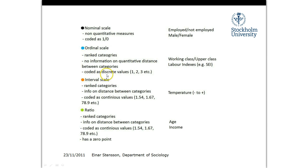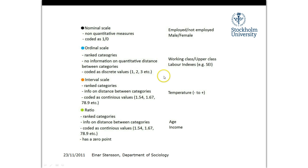Ordinal scale is different from nominal in that there's no information about the distance between the categories — we just know that we can rank them. They're usually coded as discrete values: 1, 2, 3, etc. We don't know exactly, in theory, how far the distance is between working class and upper class. We just know that we can order them.